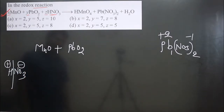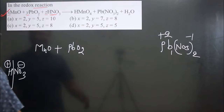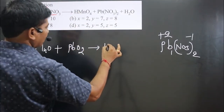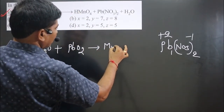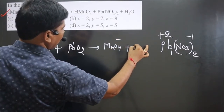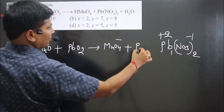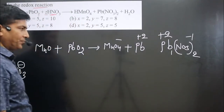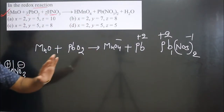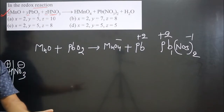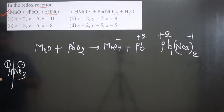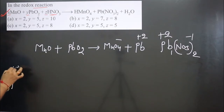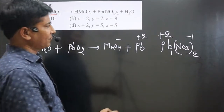On the other side, if you remove hydrogen you get MnO4 2− (permanganate ion), and from lead nitrate you get Pb in plus two oxidation state. We get a simplified equation, which we balance first, then bring the spectator ions back.